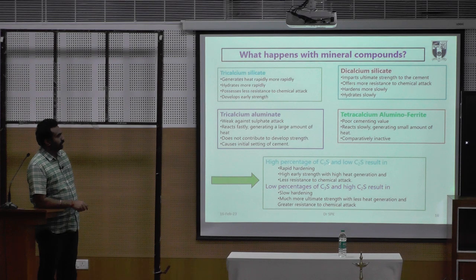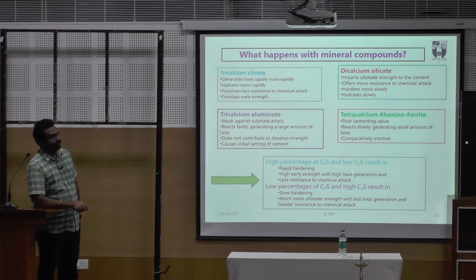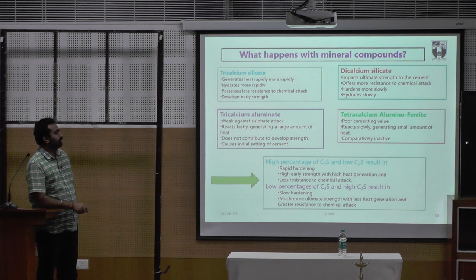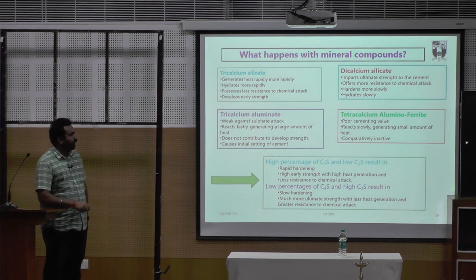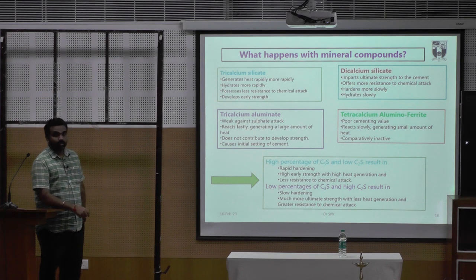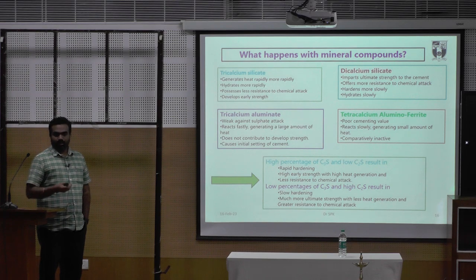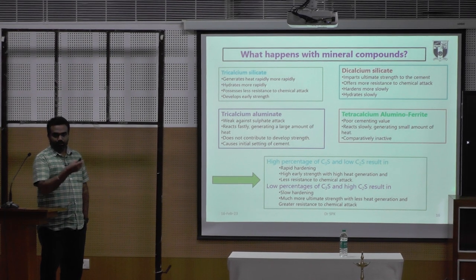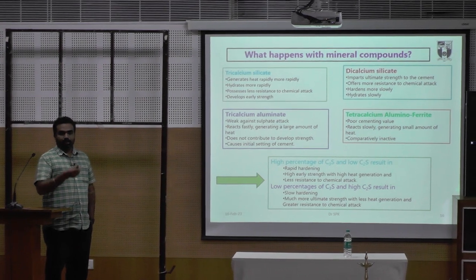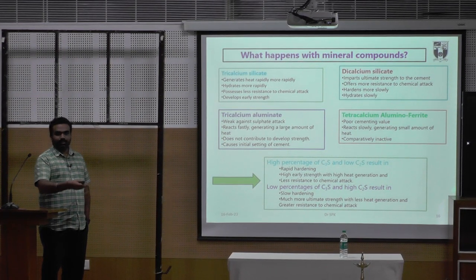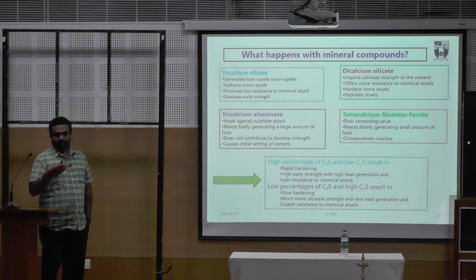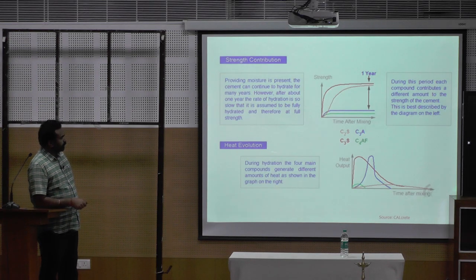For example, if you have a high or low percentage of C₃S — tricalcium silicate — the result will be rapid hardening and high early strength. Now we may have a question: how are we going to define all these things in the material which we conventionally use as an alternative for cement? There are certain procedures to be followed to obtain the required compound composition and ensure that all required parameters are satisfied with the existing codal provisions.